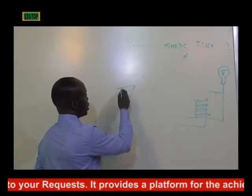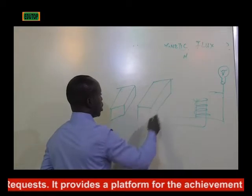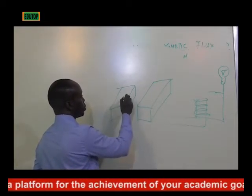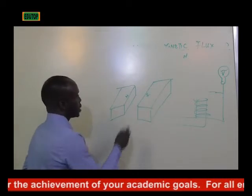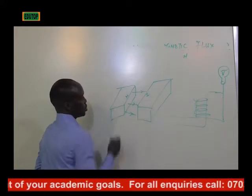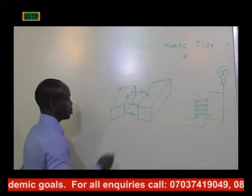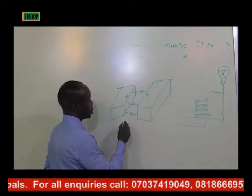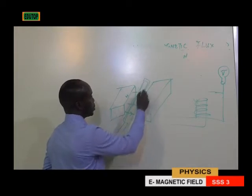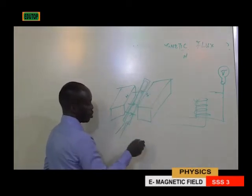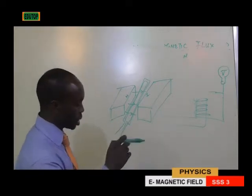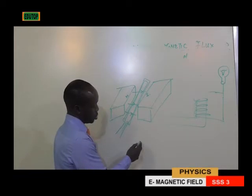If you have two magnets — you have your north here, you have your south — there is a tendency for these two magnets to attract. Now you decide to take a coil. This is a coil. If you want to know what coils are, just look through the internal section of a transformer.